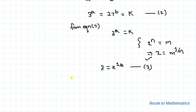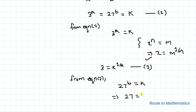Similarly, again from equation 2 we can write 27 to the power b equals k. This implies 27 equals k to the power 1/b. Let's take it as equation 4.